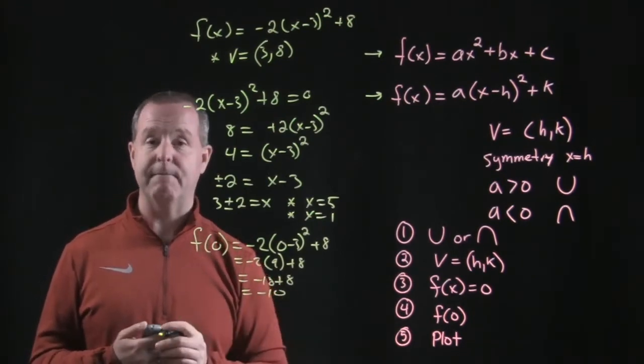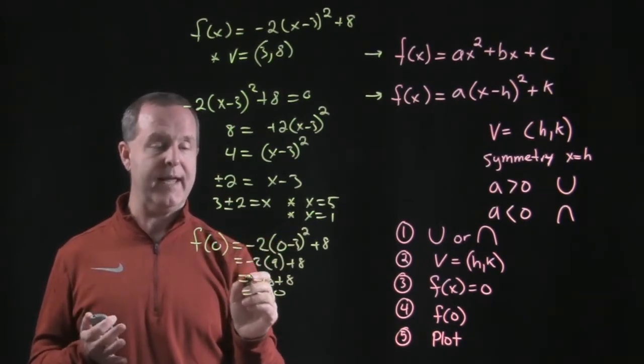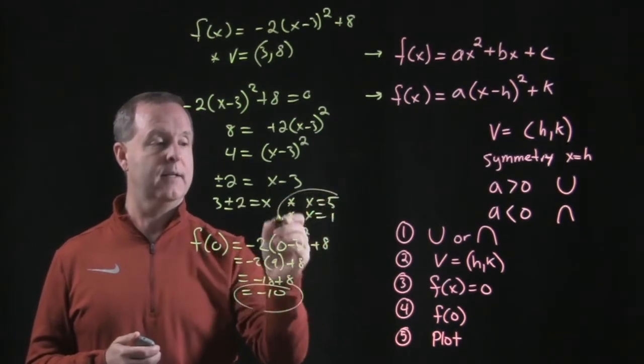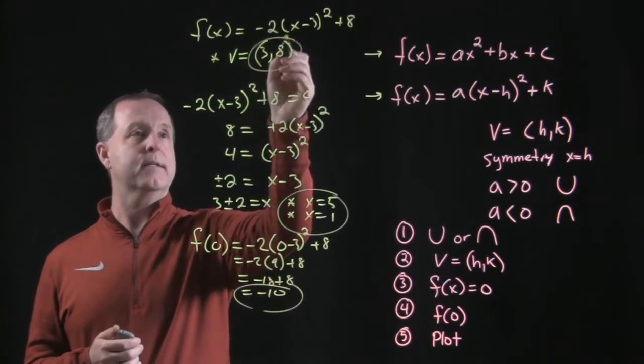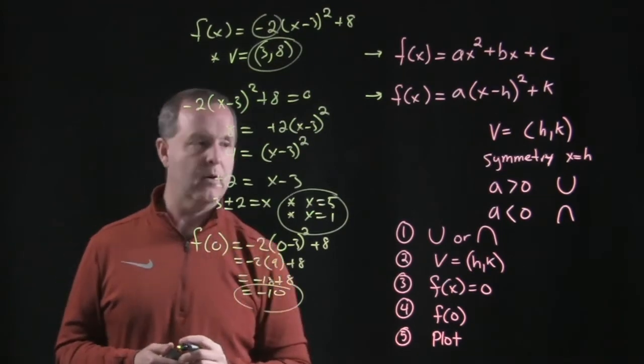And lastly, step 5, we're just going to go through and plot these points. So let's pay attention to what we have here that's a very important point. That's important. These are important. The vertex is important. And the fact that a is negative is important.